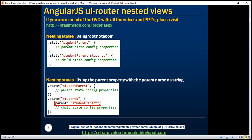One way to create nested states is by using dot notation. In this example, we have a state with the name 'studentParent', and we have another state with the name 'students'. To the name of this state, we have prepended its parent state name using dot notation. So in this example, studentParent is the parent state and students is the child state.